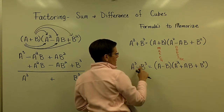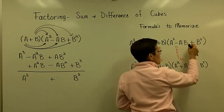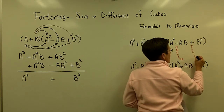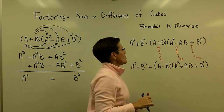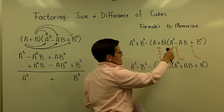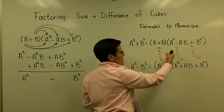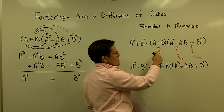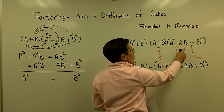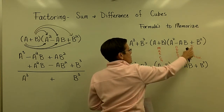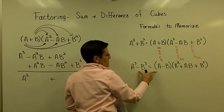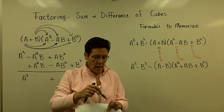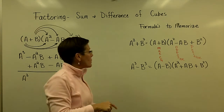Look at this plus sign — it's opposite of that one. And these two signs are always positive. So remember: this sign matches, this one's the opposite, this one's positive. We often spell the word MOP — like what you clean a floor with — M-O-P: Matches, Opposite, Positive. That's going to be a help for you to factor a problem.